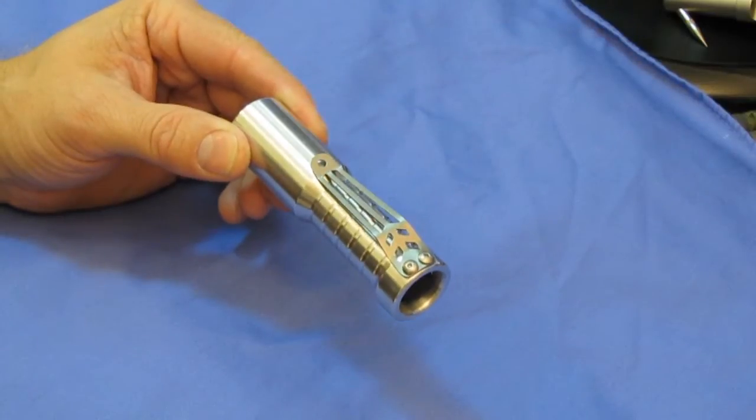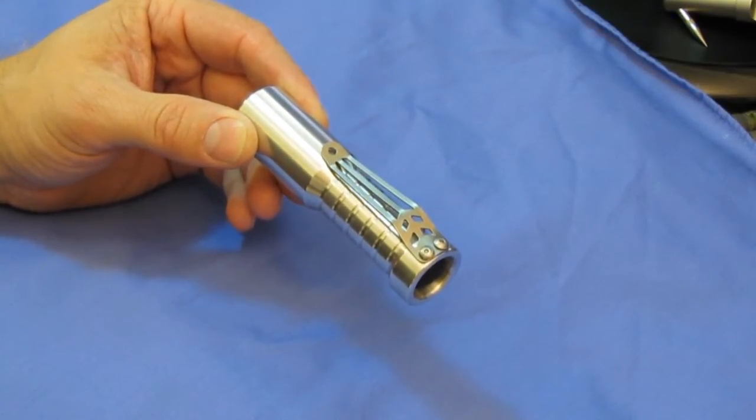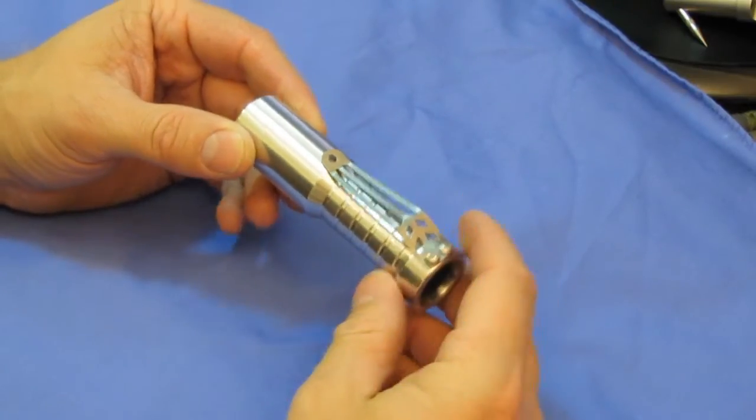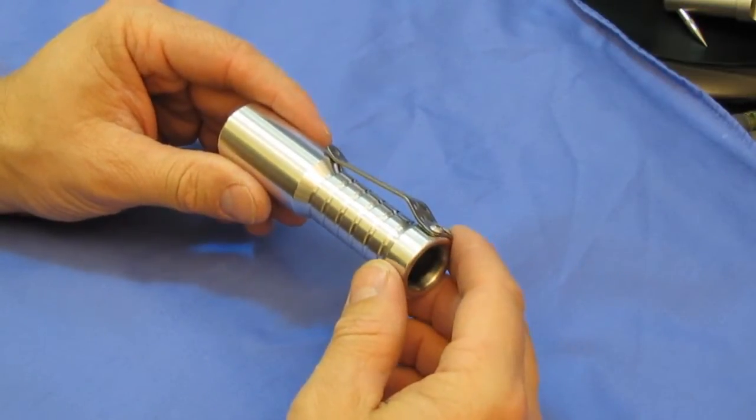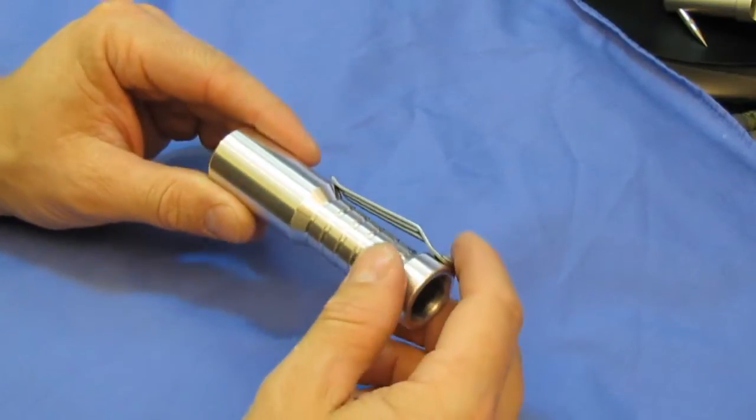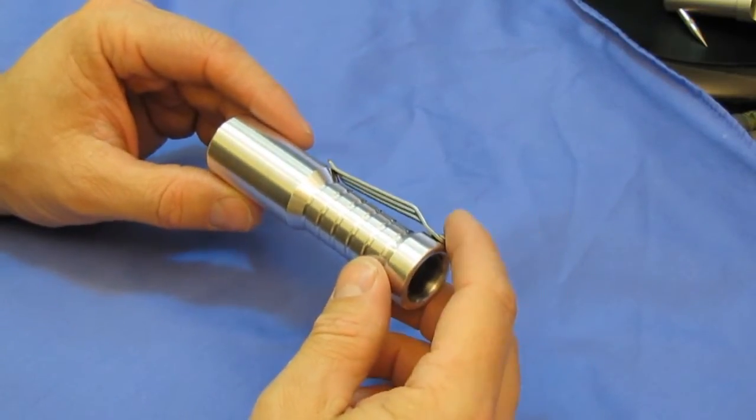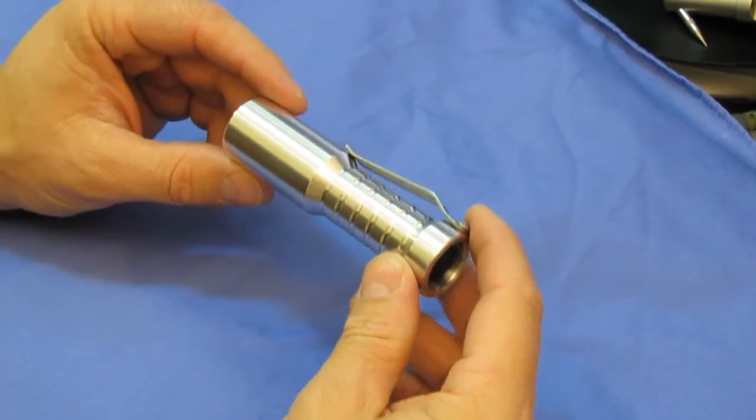This is a full custom light that I got through the Candlepower forum community and the builder is MAC of MAC's Customs. This is the SST-50 EDC light from the third run. I believe that the third run consisted of 19 aluminum versions, which this one is, and 14 titanium versions.